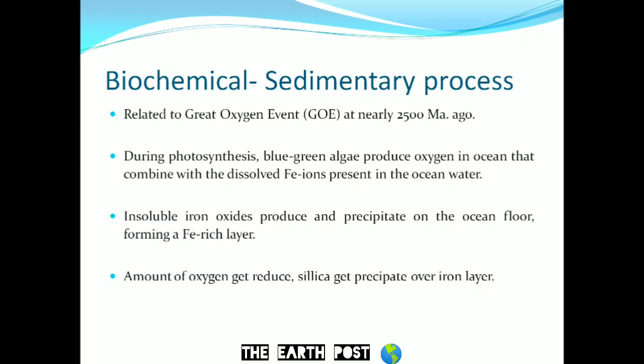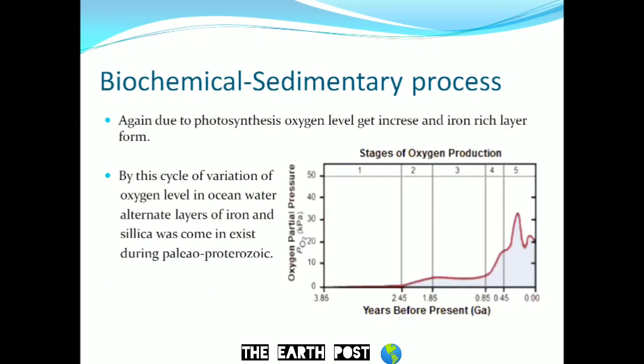The oxygen produced due to photosynthesis was very limited; as a result, the amount of oxygen got reduced and the chemical equilibria of the ocean changed, causing silica to precipitate over the iron. Again, due to photosynthesis, oxygen levels increased and iron combined with oxygen forming the iron-rich layer. By this cycle of variation in oxygen levels in the ocean, alternate layers of iron and silica came into existence during Paleoproterozoic time, forming the banded iron formation.